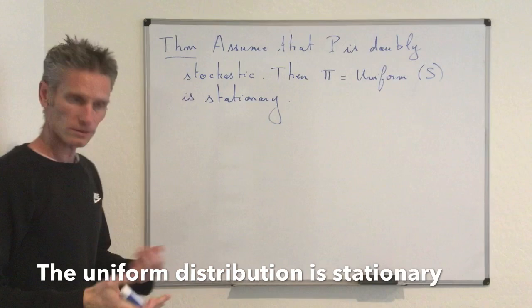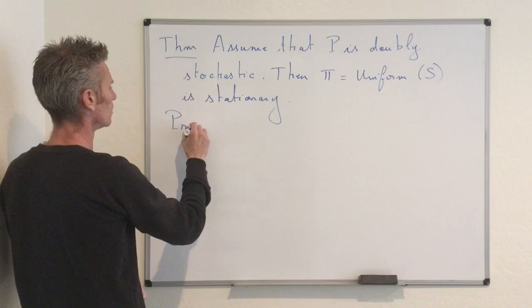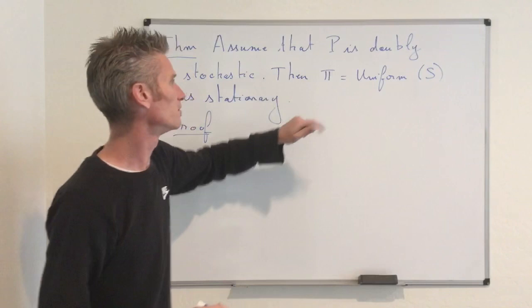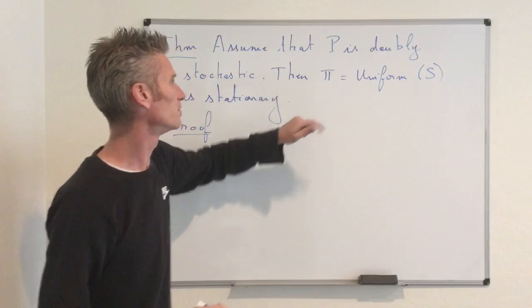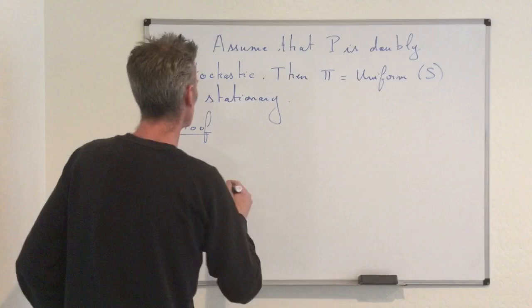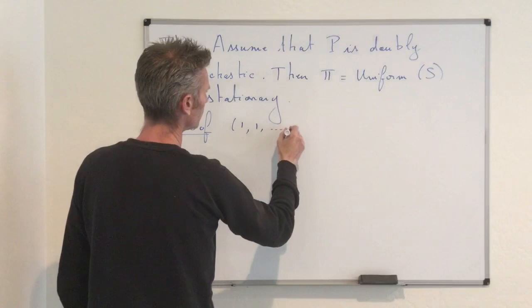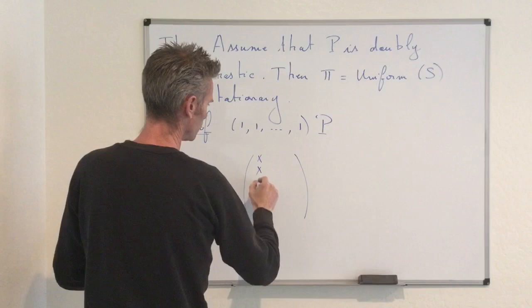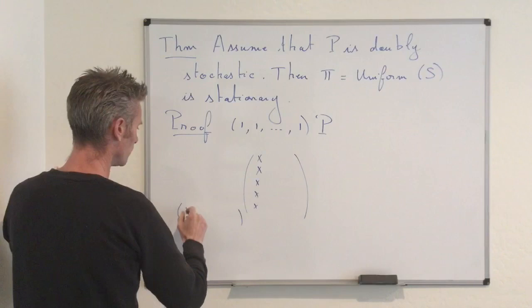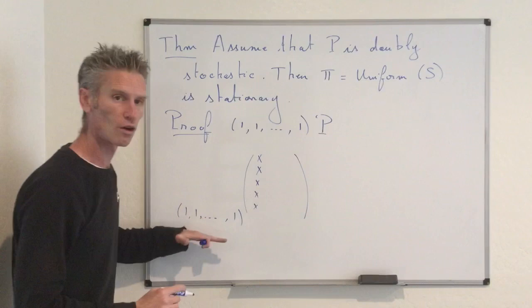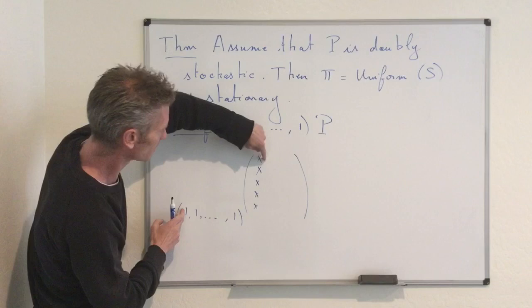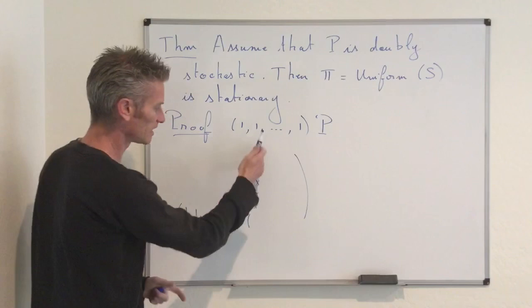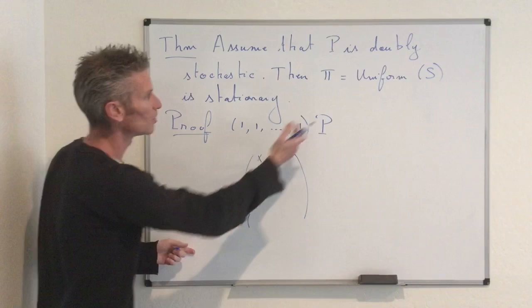The proof is pretty simple. The idea is just to check that indeed the system pi P equals pi holds for this specific choice of pi. The key observation is that if you multiply the vector with only ones as coordinates by the matrix P, the effect is just to sum the coefficients along each column. And because we assume the matrix is doubly stochastic, each such column sum is equal to 1.